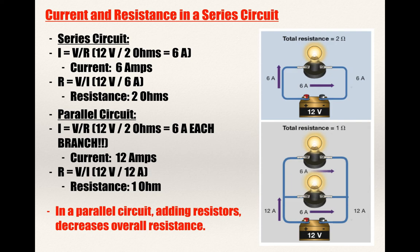For current and resistance comparisons: in a series circuit, 12 volts divided by 2 ohms gives 6 amps. In a parallel circuit with two branches, it's still 12 volts divided by 2 ohms equals 6 amps per branch — but because there are two branches, the total current is 12 amps. So resistance equals 12 volts divided by 12 amps, which gives 1 ohm.